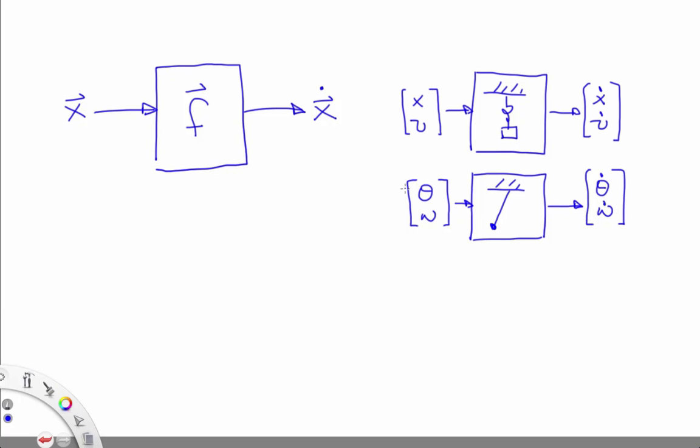The state variables of the simple harmonic oscillator are the position x and the velocity v of the mass. The state variables of the pendulum are the angular position and angular velocity of the bob of the pendulum. This is a differential equation.